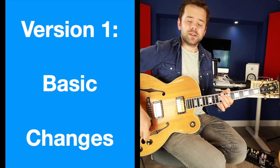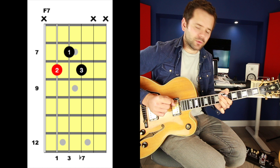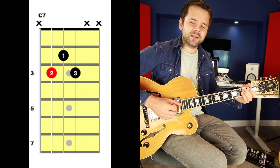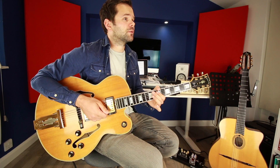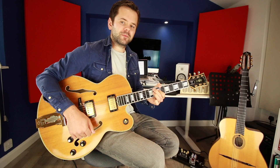Version one is a very plain way of playing it — very vanilla — but people do play it this way. We're in the key of F and the chords you're going to need are: chord one F7, chord four B flat seven, chord two G minor seven, chord five C7. Very simple. It goes: F7 for four bars, B flat seven for two bars, F7 for two bars, then one bar G minor seven, C7, F7, C7.